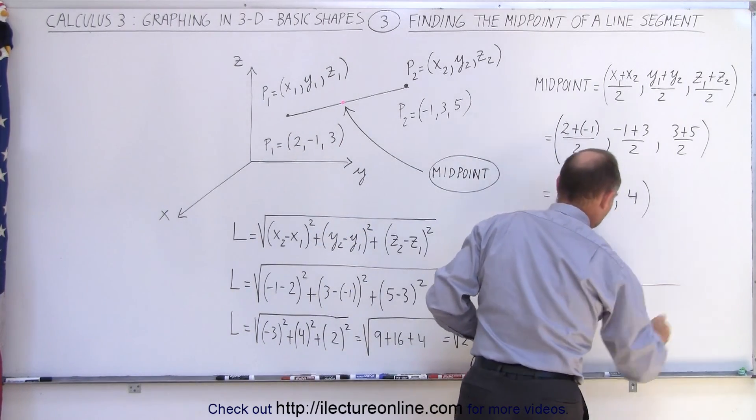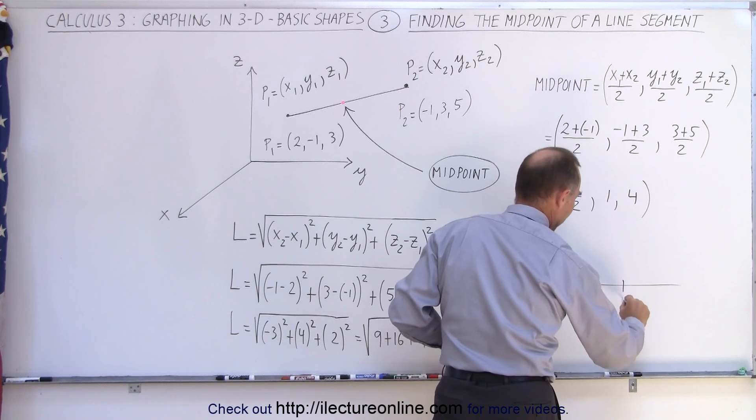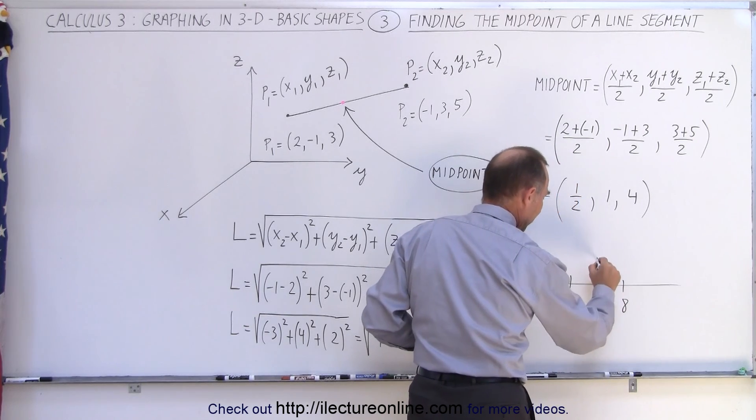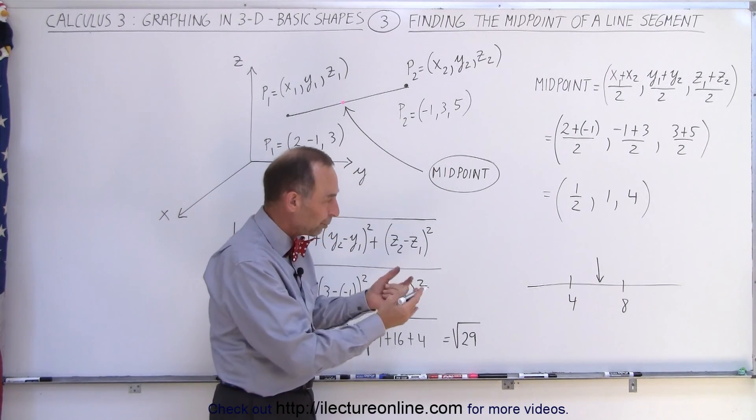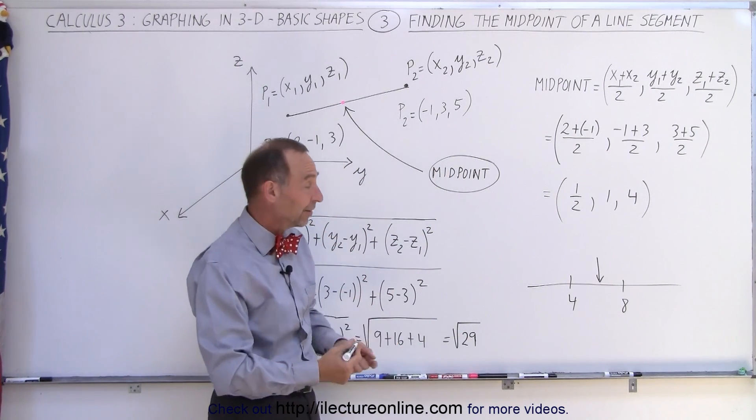Let's say we have a number line, and we have the number 4, and we have the number 8. If you want to find the midpoint, you can look at this and easily realize that the midpoint between 4 and 8 must be 6.